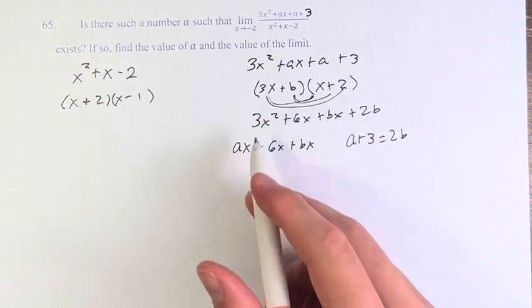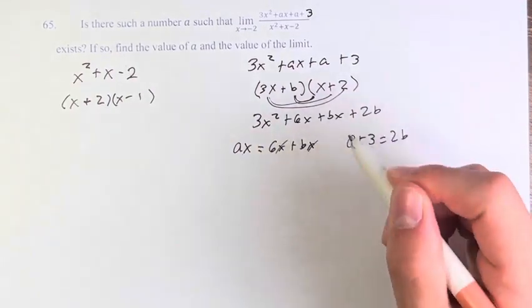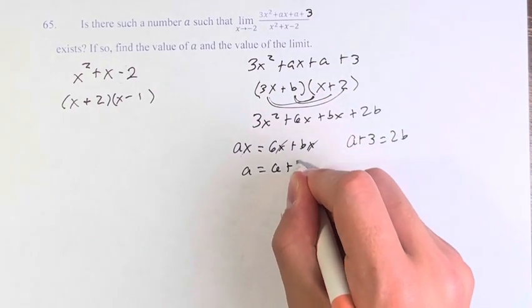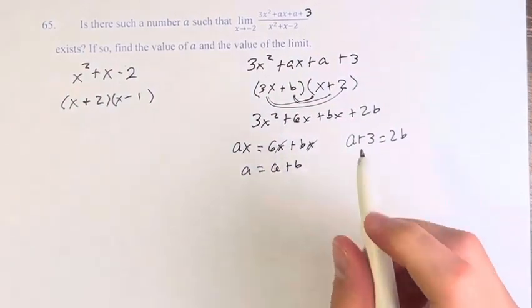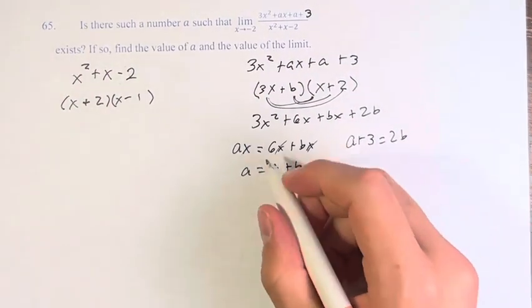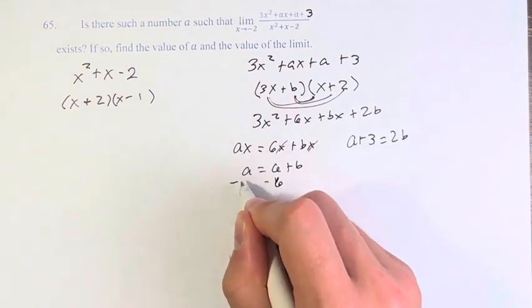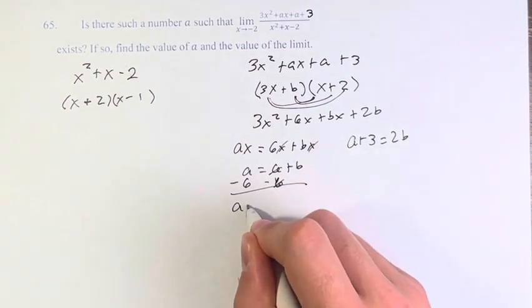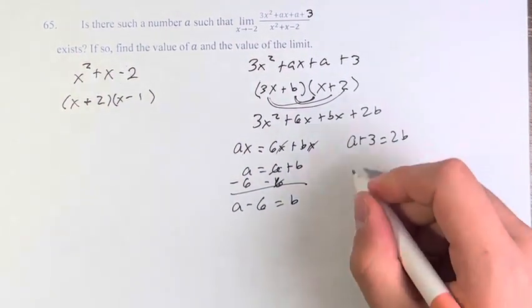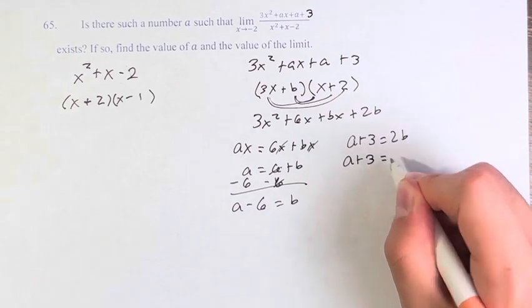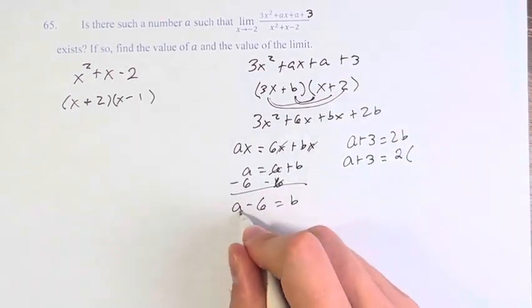And a plus 3 has to equal 2b. The constants have to match. So if we cancel out an x from all of these terms, we get a equals 6 plus b. We don't want to plug in a, we want to plug in b. So if we subtract 6 from both sides, we get a minus 6 equals b. So therefore,